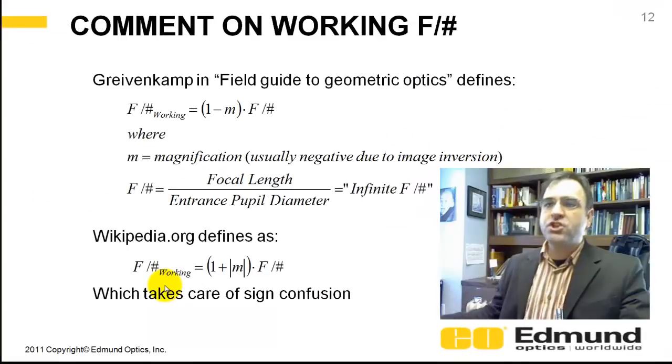When you change conjugates, you're going to get a different magnification. Magnification is the ratio of the image to object diameter, or image distance to object distance.